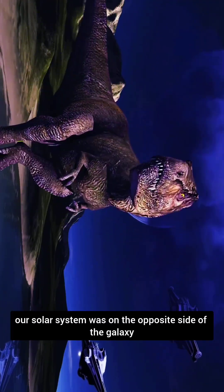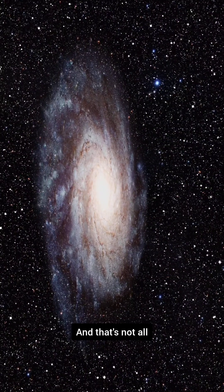So yeah, when dinosaurs walked the Earth, our solar system was on the opposite side of the galaxy. And that's not all—the entire Milky Way itself is moving too.